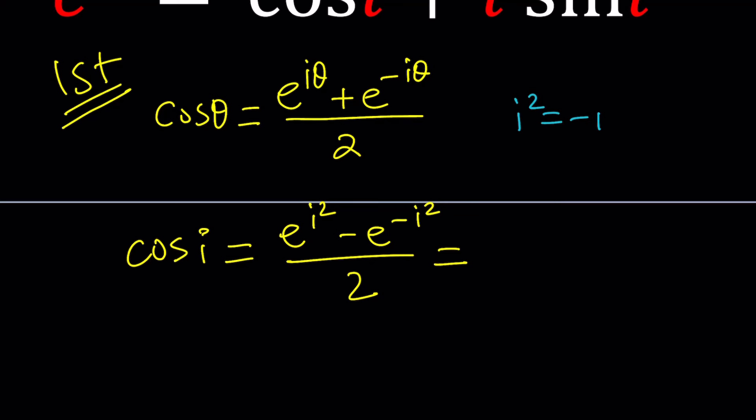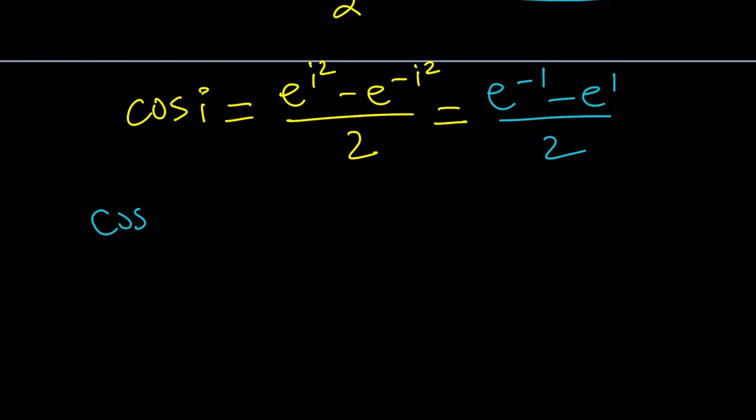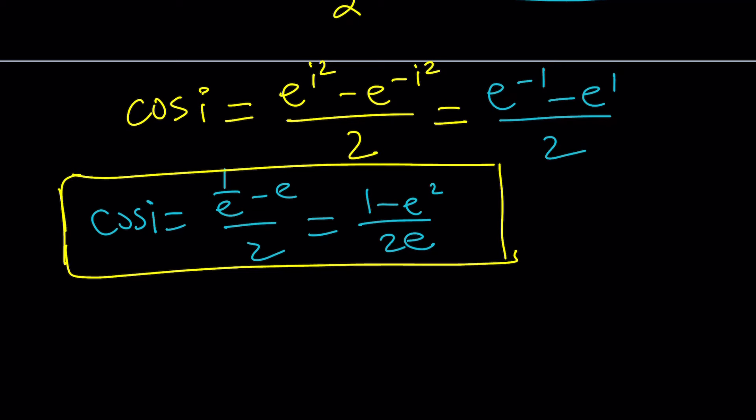So i squared is negative 1. One thing that you should never ever forget about complex numbers, and that's the definition. So i squared you can replace with negative 1, and negative i squared is going to be 1 obviously. And now cosine i can be written as 1 over e minus e divided by 2, which can also be written as 1 minus e squared divided by 2e. Something that's really cool about cosine of an imaginary number is that it's real. Can you believe that? Really? Okay anyways, that's what it is.